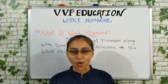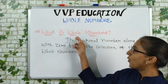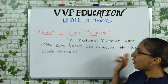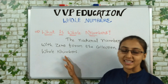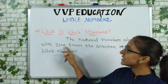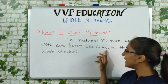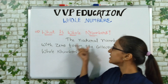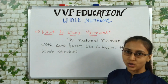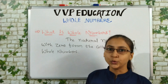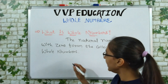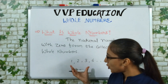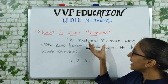So what is a whole number? The natural numbers along with zero form the collection of whole numbers. Now the question is what is a natural number? Natural numbers are counting numbers: one, two, three, four and so on. That series is our natural number.